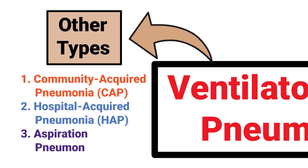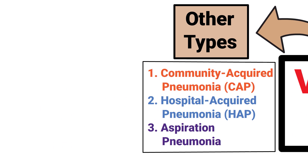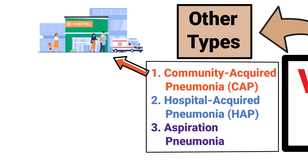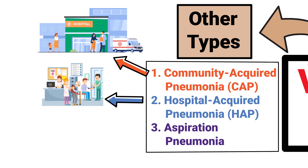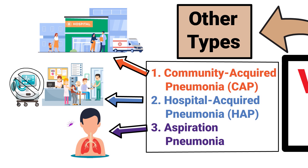The other types of pneumonia include community-acquired, hospital-acquired, and aspiration pneumonia. The specific type is classified according to how the patient acquires the disease. Community-acquired pneumonia is when the patient gets it outside of the hospital. Hospital-acquired pneumonia is when the patient gets it inside the hospital but it's not related to mechanical ventilation. Aspiration pneumonia is acquired when a patient aspirates bacteria into the lungs, usually from food, saliva, or stomach acid.